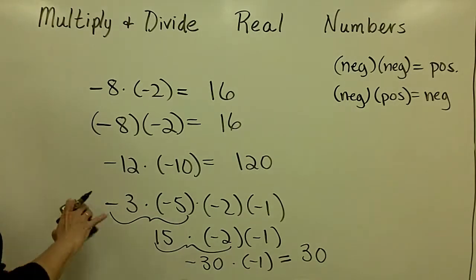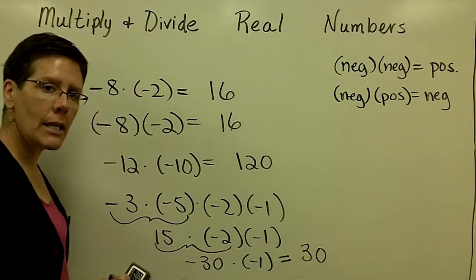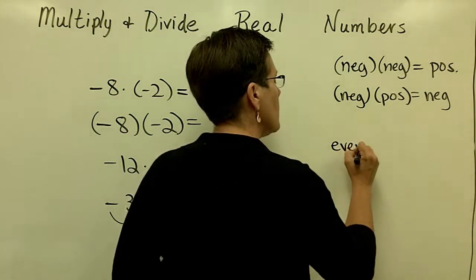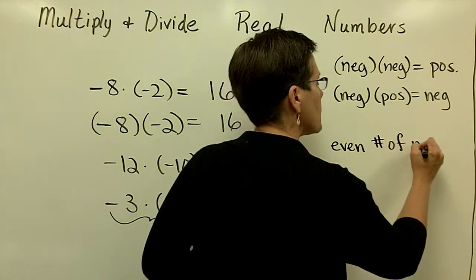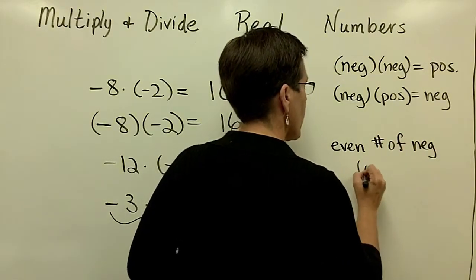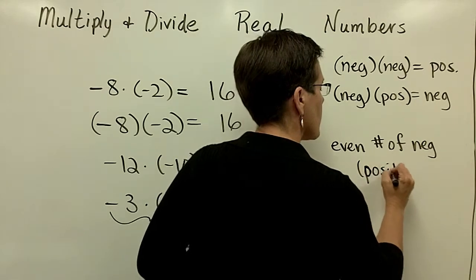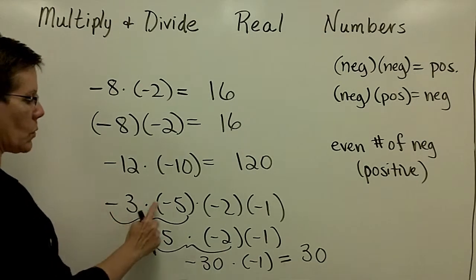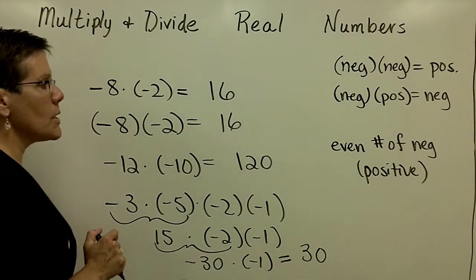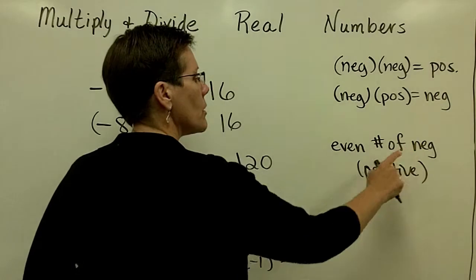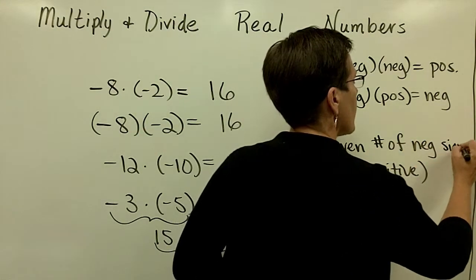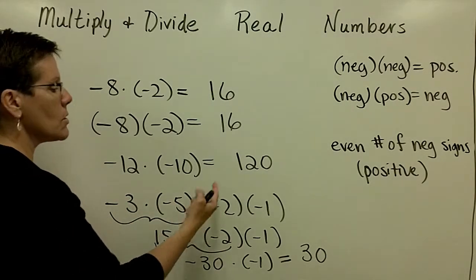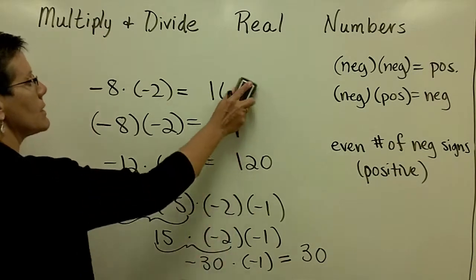Please notice that there are 1, 2, 3, 4 negative signs in that problem. From now on, if you have an even number of negative signs, you're going to get a positive answer. You wouldn't have to go through all that work — just notice that there are 4 negative signs, an even number, so the answer is positive. You could say 3 times 5 is 15, times 2 is 30, times 1 is 30, and give your answer as positive 30.